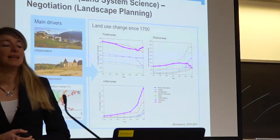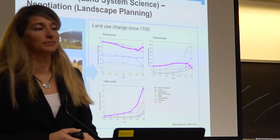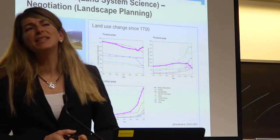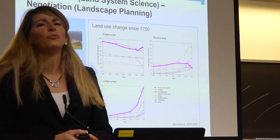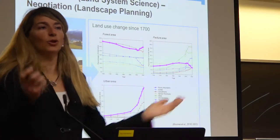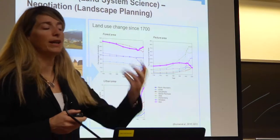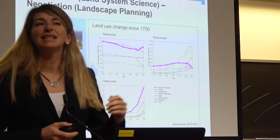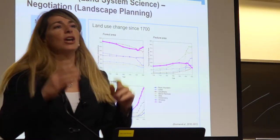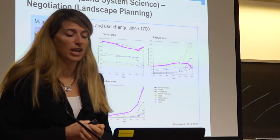The next point is about prediction and negotiation. In landscape design, you don't do a lot of simulation or prediction in the future. You usually just design the current situation. Maybe you do some scenarios, but you don't predict. Land system science has done a lot of prediction — they are very interested in trying to understand the past, how it changed, and then to put some pressure and pulses on the systems and see how this changes.